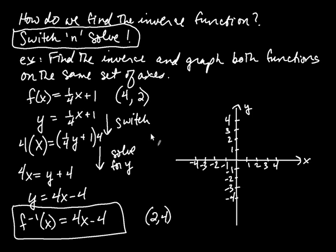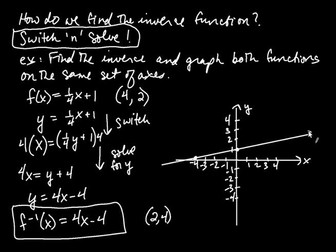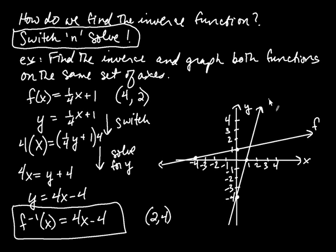Let's now graph these two functions on the same set of axes. They're both lines. The original function has an x-intercept of −4 (when x = −4, y = 0) and a y-intercept of positive 1, so I draw a line through those two points — that's the graph of f. For the inverse, when x = 0, y = −4 (the y-intercept), and when x = 1, y = 0. I draw a line through those two points — that's the graph of f⁻¹.